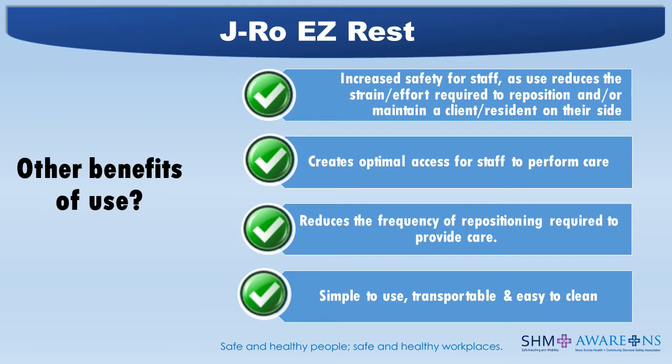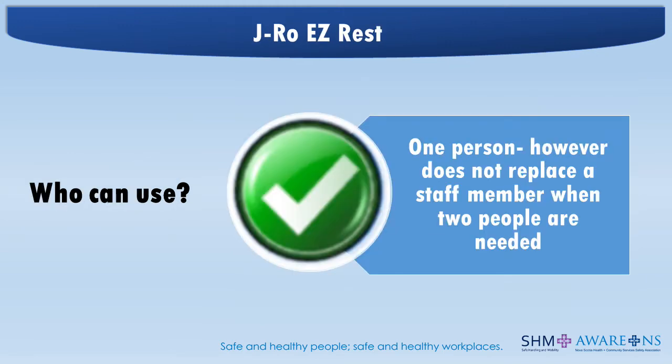We are seeing a spike in wrist-related injuries in healthcare. Holding an individual in a side position over an extended period of time can lead to wrist soreness. The J-ROW Easy Rest also lets you be hands-free from time to time, allowing for much-needed postural breaks and freedom to move while providing care. One person can use it; however, it does not replace a staff member when two people are needed to provide care or reposition a client.